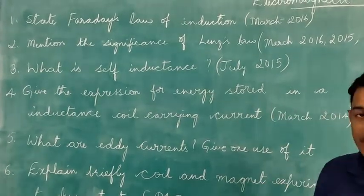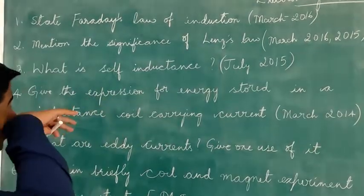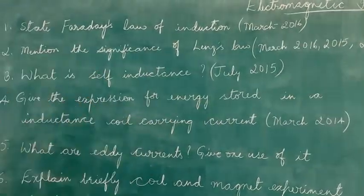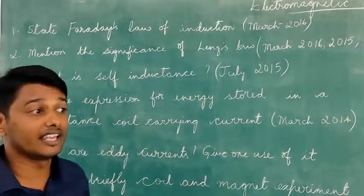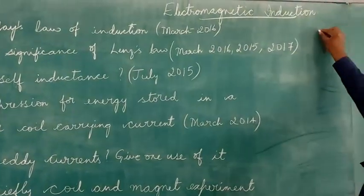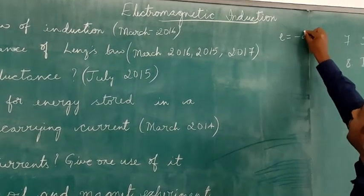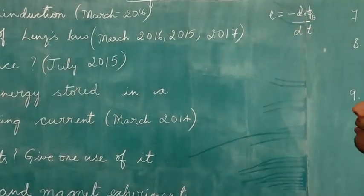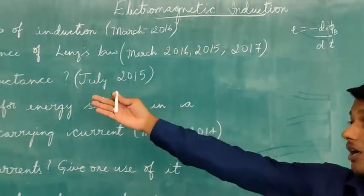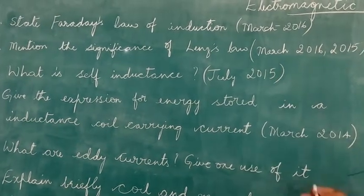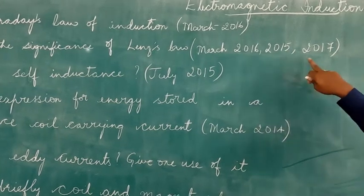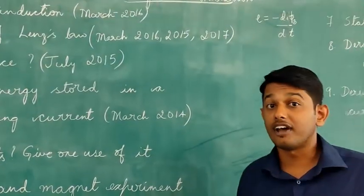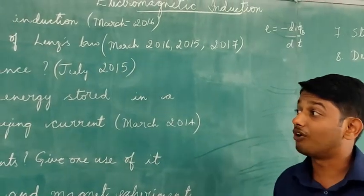These are questions that appeared in previous question papers. The first question: state Faraday's Law of Induction, asked in March 2016. Faraday's Law of Induction states that the magnitude of the induced EMF is equal to the time rate of change of magnetic flux through the circuit, expressed as E = −dΦ_B/dt. The next question: mention the significance of Lenz's Law, asked in March 2016, March 2015, and March 2017. The significance of Lenz's Law is the Law of Conservation of Energy.